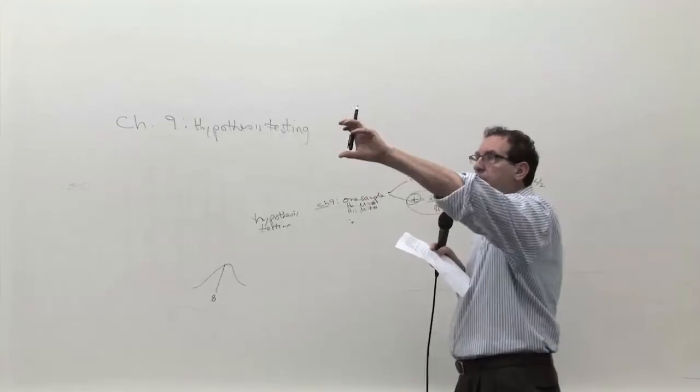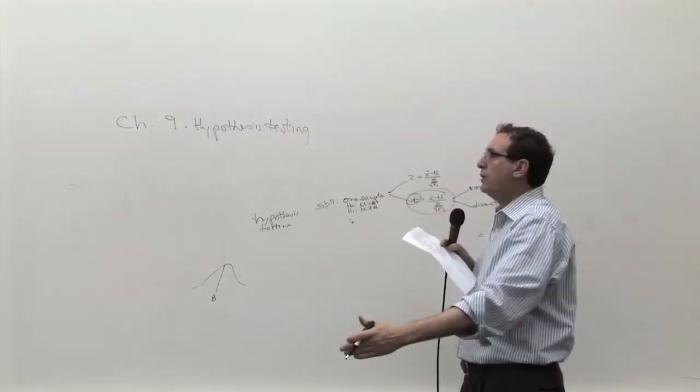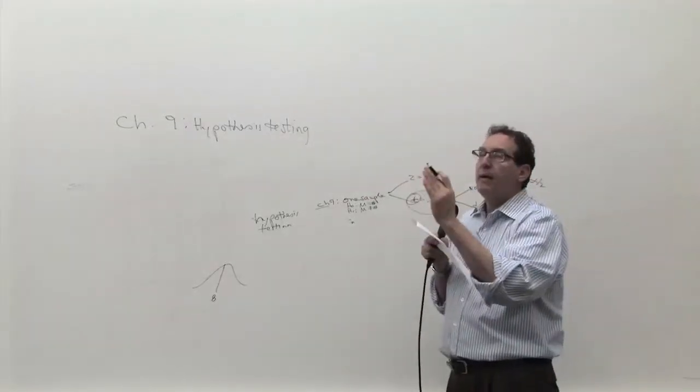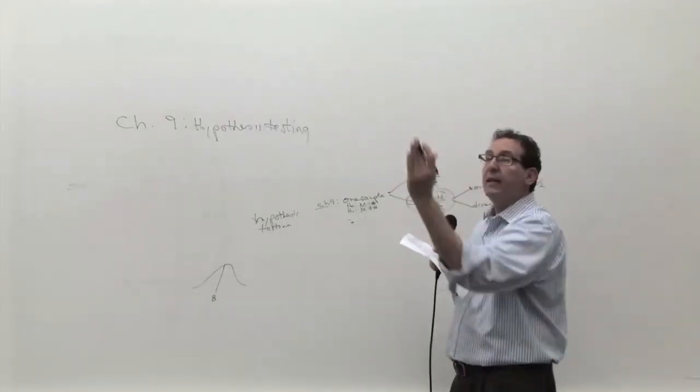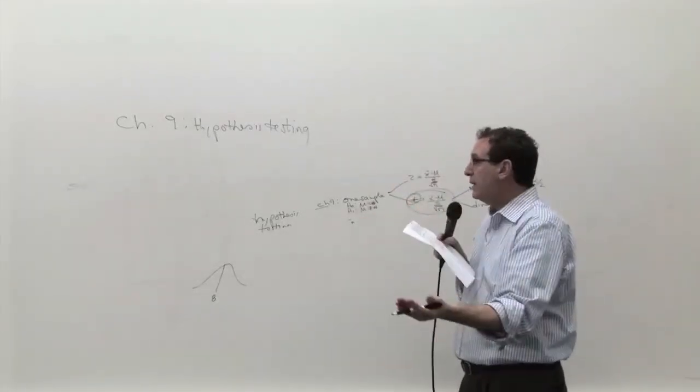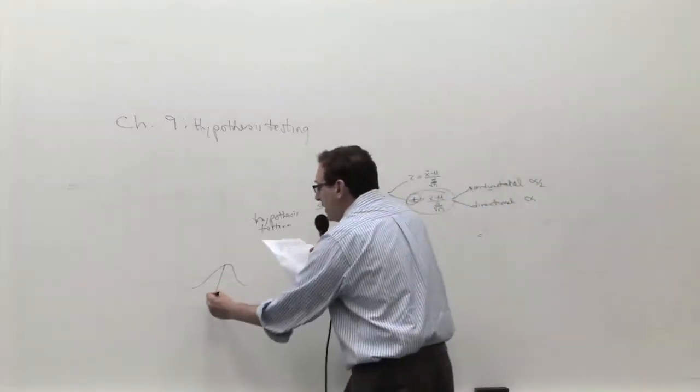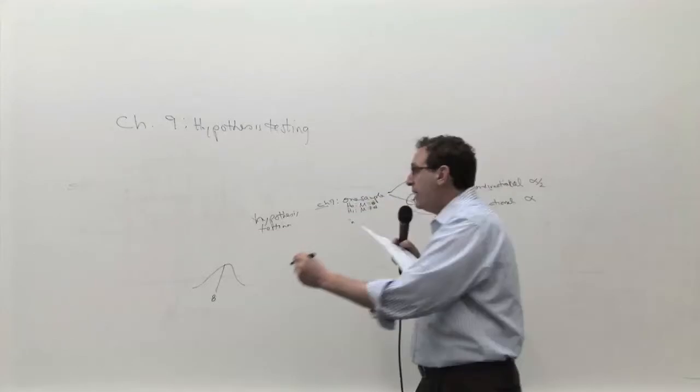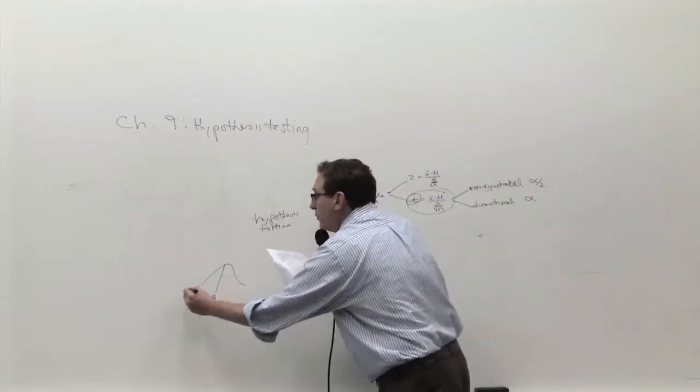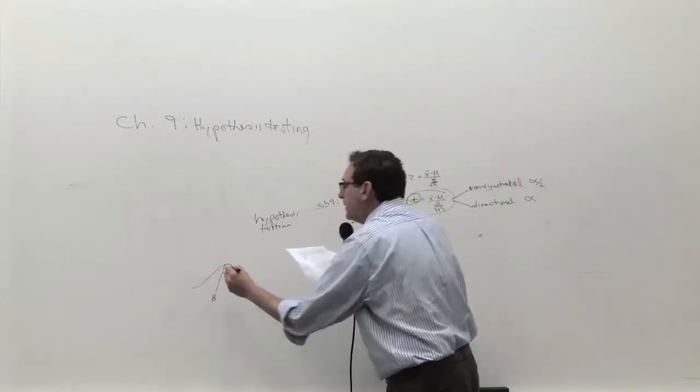In other words, you set the dial on the machine to produce 8-ounce packages of candy. You think every package of candy is exactly 8.0000, but some are slightly higher, some are slightly lower. So if you say 8, and assuming it follows a bell-shaped curve, most of them are around 8, some are a little bit higher. You're going to get very few of them that are 9, very few that are 7, but it depends upon the standard deviation.